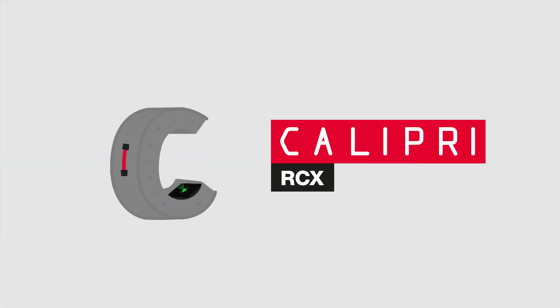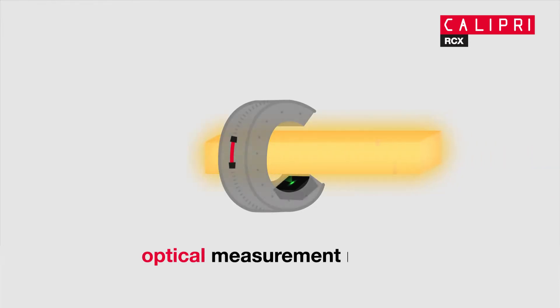Simply use Calipri by NextSense, the alternative to conventional measuring techniques. Calipri is the only portable profile measurement gauge that can be used on hot material even right between the roll stands.